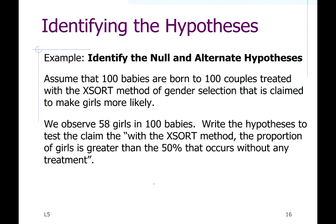For example, assume that 100 babies are born to 100 couples treated with an X-sort method of gender selection that is claimed to make girls more likely. So if you're planning to have a child but want a daughter, you could go to this fertility clinic and use their method — called X-sort — pay them a lot of money, and if you use their treatment it increases your chances of having a girl. That is a statistical claim.